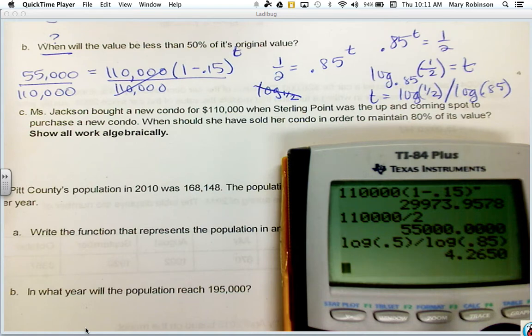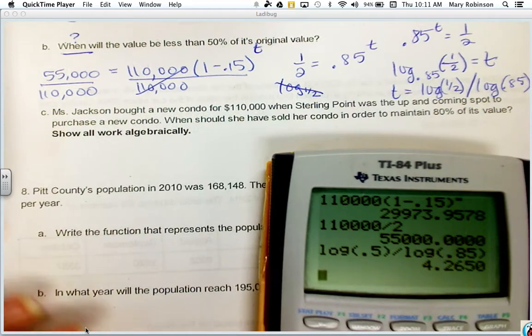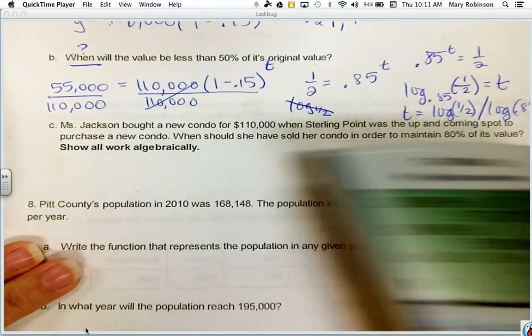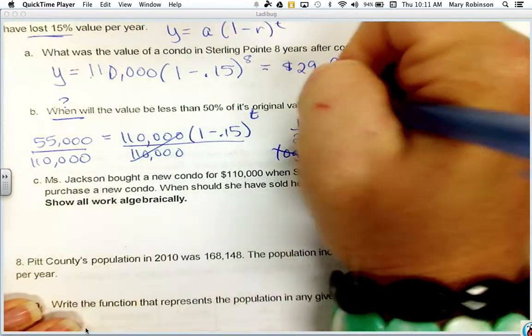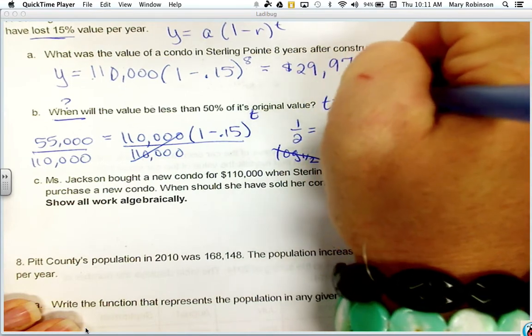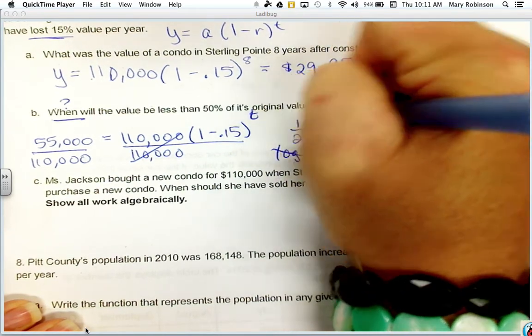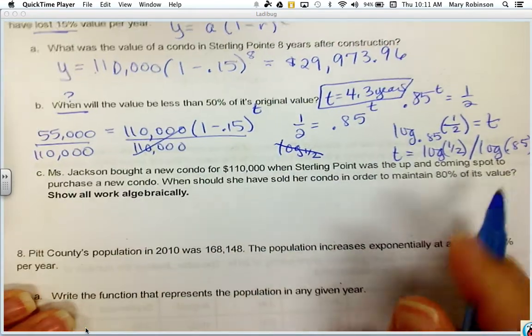Let's go ahead and plan to round. Let's round to the tenths place. So we'll call that 4.3 years. So T equals 4.3 years. But make sure you have your work to support it.